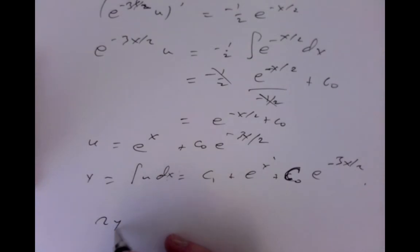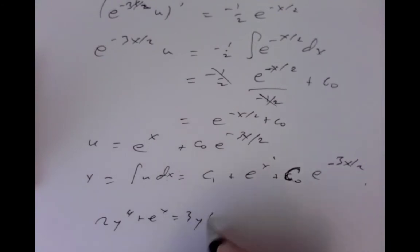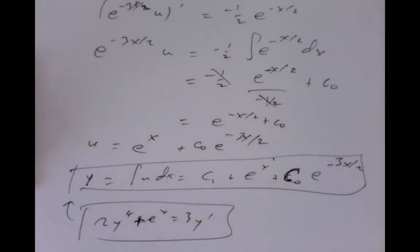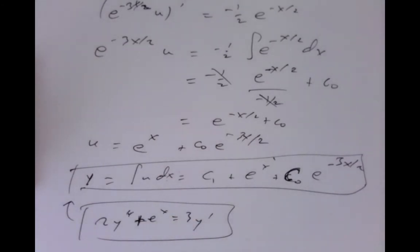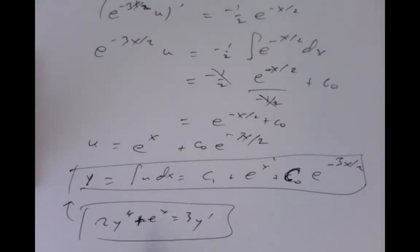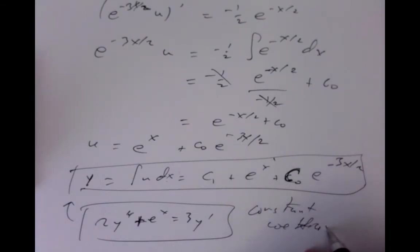Looking back at this equation again, we realized there actually were constant coefficients — there's a 2 here and a minus 3 if we put it over the other side — so this was not really a problem that had to be solved using this fancy method. We could have used our previous methods for constant coefficient equations.